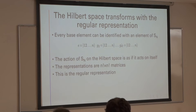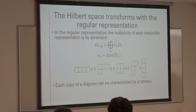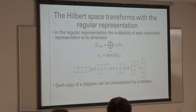Now let's look at the Hilbert space as a whole. Each basis element can be identified with a certain permutation of the group, so when the symmetry group acts on the Hilbert space it acts on itself via matrices — this is the regular representation of the symmetry group S_N. We know that the regular representation of a finite group decomposes into a direct sum of all of its possible irreducible representations, where each one appears a number of times equal to its dimension. For N equals 4, this diagram appears once, this diagram appears three times, etc. Notice that this diagram and this diagram correspond to the symmetric and the anti-symmetric state.